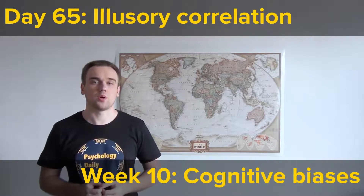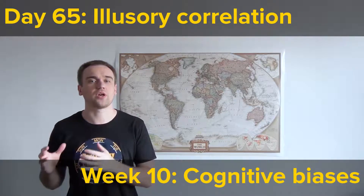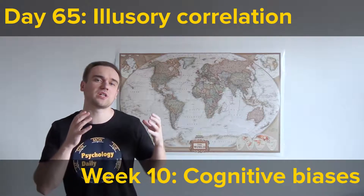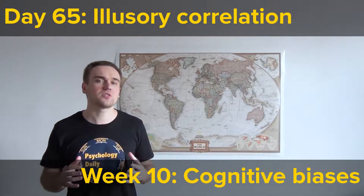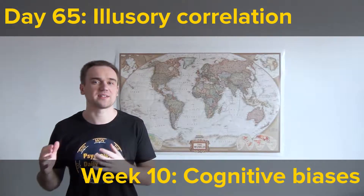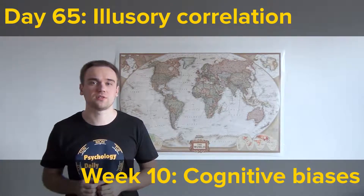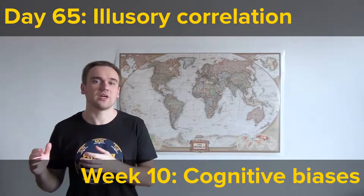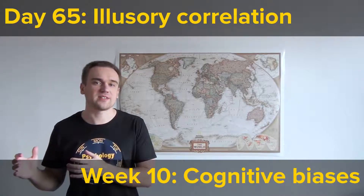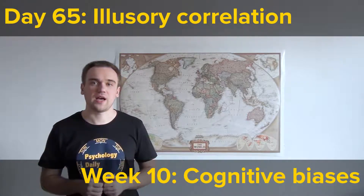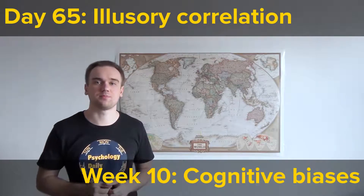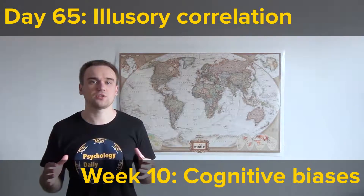Welcome to Psychology Daily. We continue the week on cognitive biases and today I will tell you about one bias responsible for such things as stereotypes, or beliefs about the relationship between lunar phases and aggressiveness, and bad weather and headaches. It's called illusory correlation.